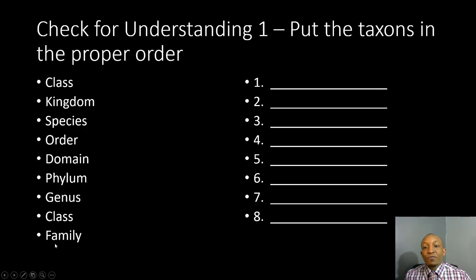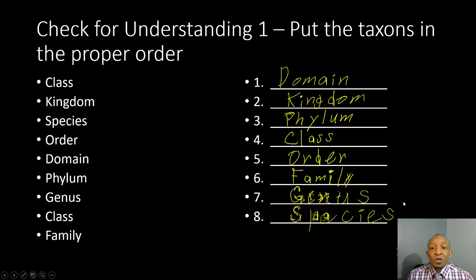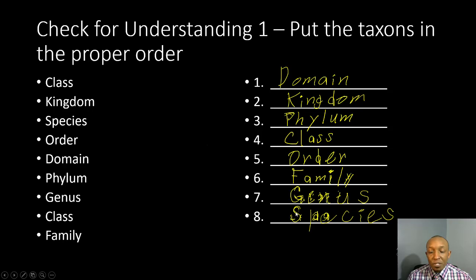Now let's do our first check for understanding. You're going to put the taxons in the proper order. I'll give you one minute — pause the video now. The correct order is: domain, kingdom, phylum, class, order, family, genus, and species. If you remembered that mnemonic 'Did King Philip Come Over For Grape Soda,' then you probably did very well on this.